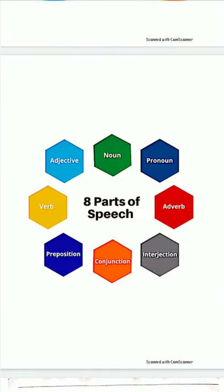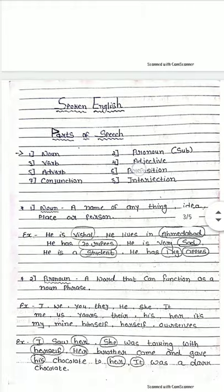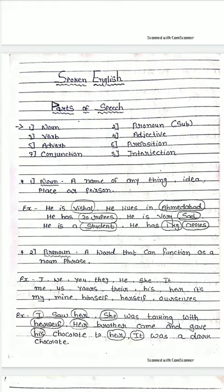What is a part of speech? Whatever we speak — a sentence means a group of words having proper formation. Whenever we speak any sentence, all those things are parts of speech. There are eight parts of speech: noun, pronoun, adverb, interjection, conjunction, preposition, verb, and adjective. So let us start with parts of speech.